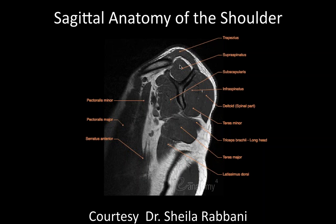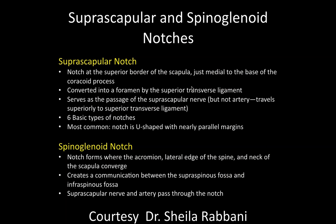If the mass is at the suprascapular notch, you tend to affect the innervation of the supraspinatus muscle. If it's in the spinal glenoid notch more inferiorly, you can get the nerve before it branches to both muscles, affecting both. Seeing that can help you determine the location — we'll talk about both the suprascapular notch and spinal glenoid notch.